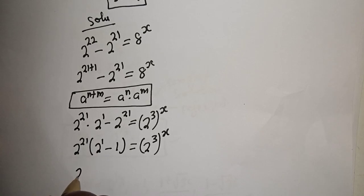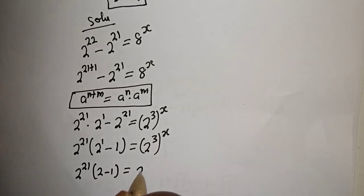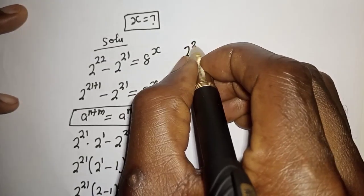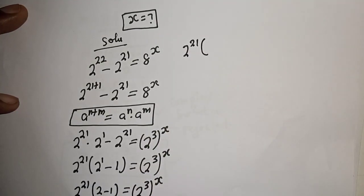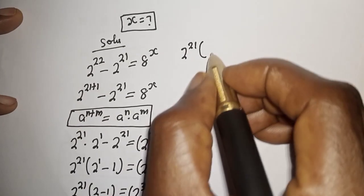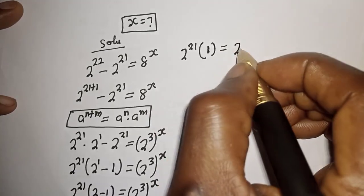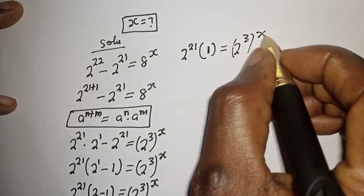Then here is 2 raised to power 21 in bracket. 2 raised to power 1 is 2, minus 1, is equal to 2 raised to power 3 to the power of x. Here is 2 raised to power 21 bracket 2 minus 1, that is 2 raised to power 1, is equal to 2 raised to power 3 to the power of x.